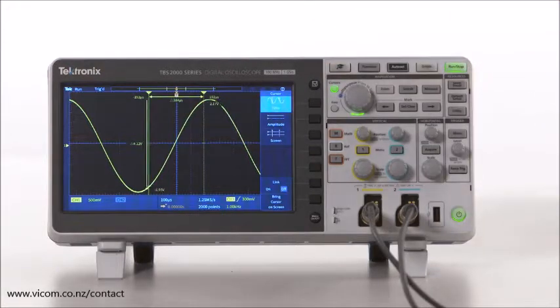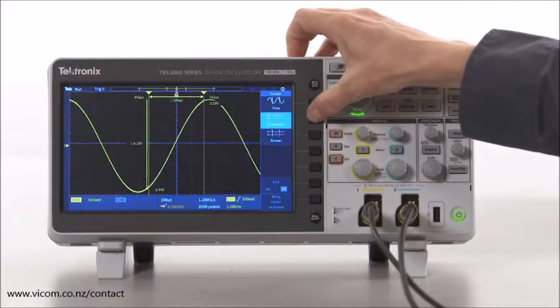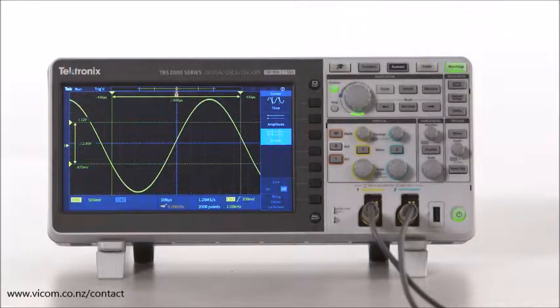On this scope, you activate the cursors by pressing the cursor button. This scope has three types of cursors: Time or vertical cursors, amplitude or horizontal cursors, and screen cursors, which is a combination of both horizontal and vertical cursors for time and amplitude measurements.